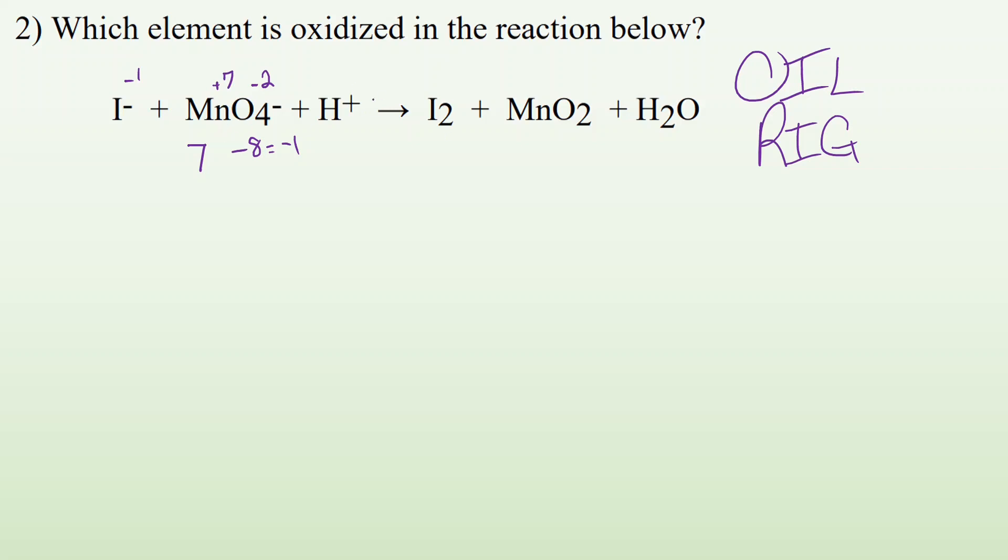Hydrogen, they tell you it's plus one right there. I2, if it's an element just by itself, even if it's a diatomic molecule, it's still just iodine. And the way I remember that is, you're all by yourself. You're a loser. That's a zero. You have a zero oxidation number. It's a little harsh, but that's how I remember it.